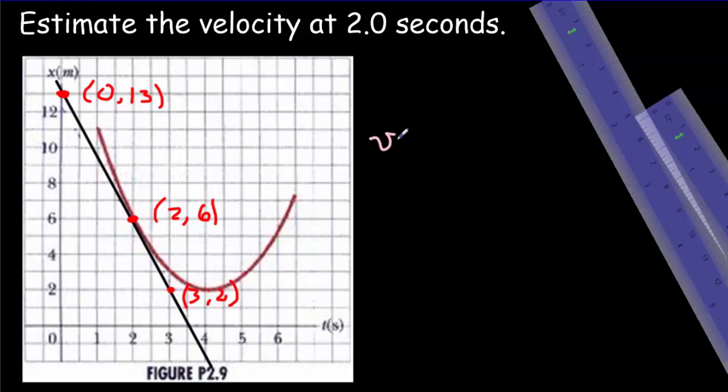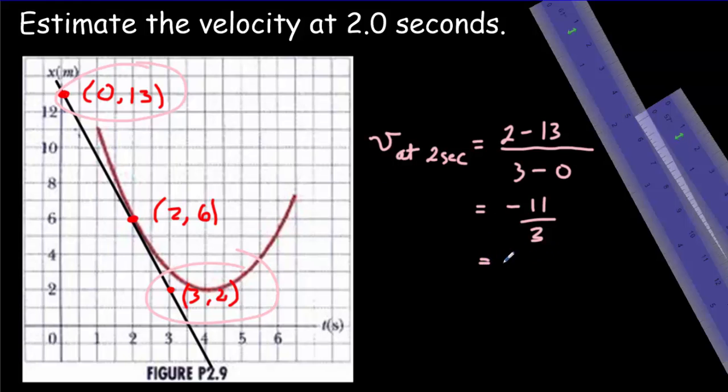So now we can say that the instantaneous velocity at 2 seconds will be equal to the rise over the run. So choosing these two points, rise 2 minus 13, run 3 minus 0. So we get negative 11 divided by 3 or approximately negative 3.7 meters per second. And 3.7 should be a more accurate result than our previous result, which I believe was 4 meters per second. Now we try to be skillful in the way that we place our ruler. But of course, this is just an estimate. But we should be able to get within about 10% of the true answer. And generally the IB will accept answers within at least 10% of the true answer when you're using the slope of a tangent to make an estimate.